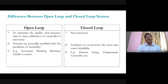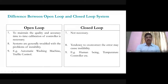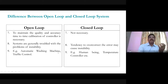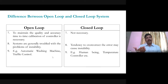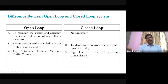Examples of open-loop control systems include washing machines and traffic control. An electric iron — which measures temperature and automatically switches on or off when the temperature is reached — is a closed-loop control system. Air conditioners and the human body are also closed-loop systems. For the human body, the five sensory organs (eyes, ears, nose, tongue, and skin) act as feedback elements, and the brain acts as the controller.